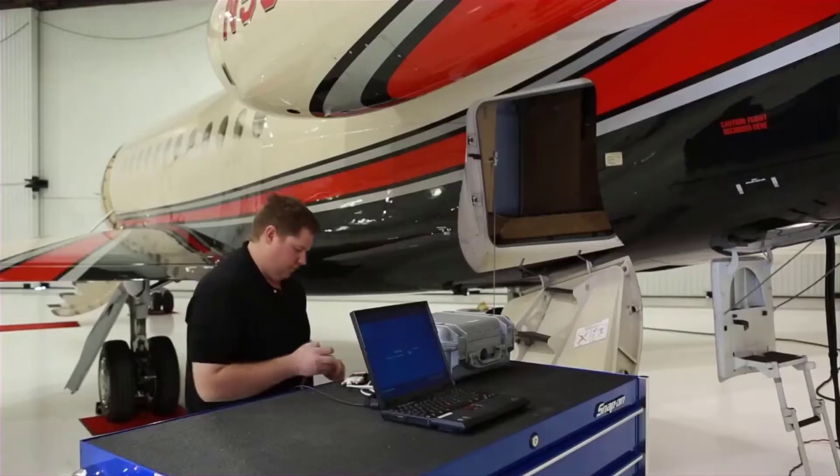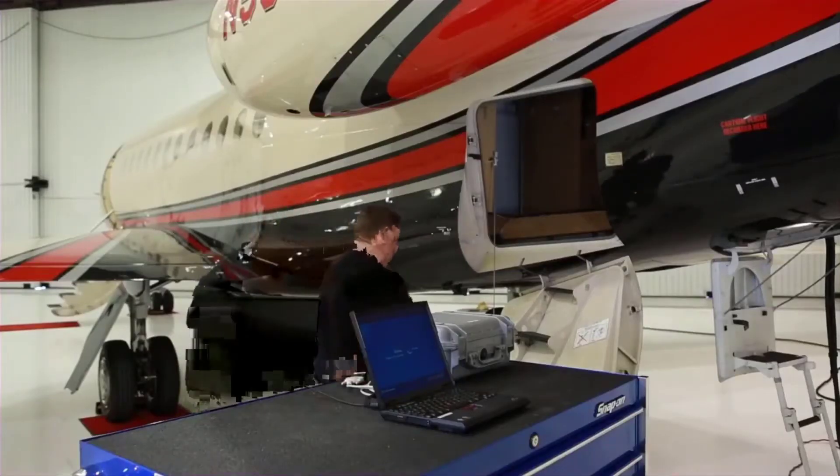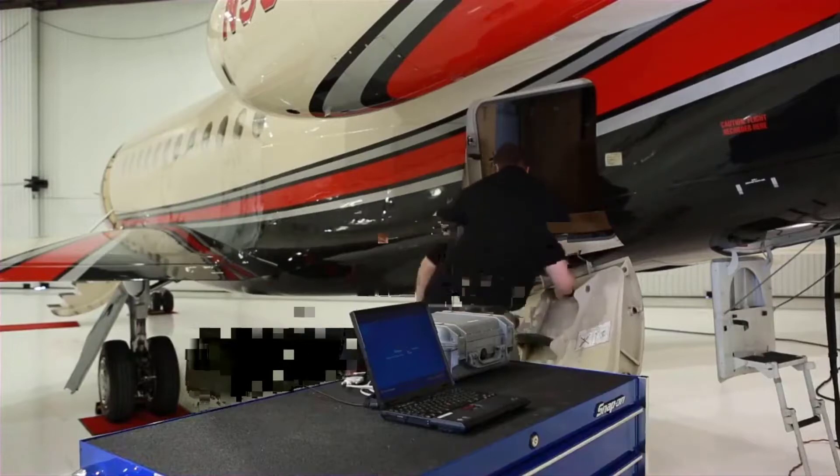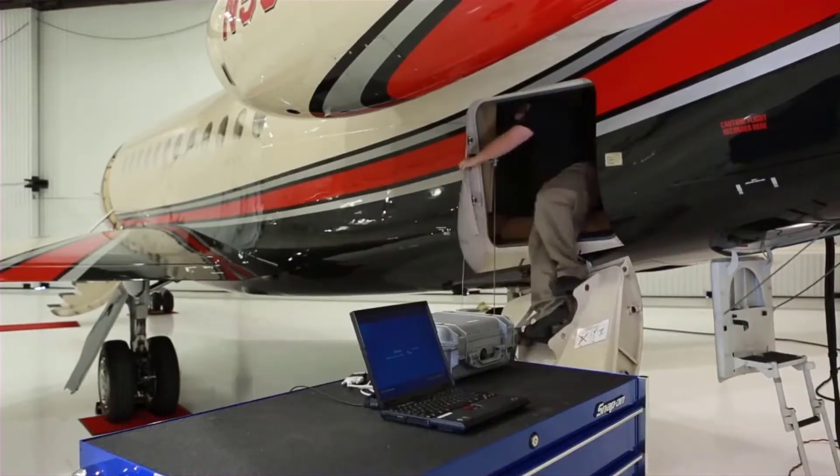The N1 DEC continuously monitors engine parameters and events during engine operation and periodically stores the required information in memory located within the DEC. At specified intervals, the data stored within the N1 DEC memory must be downloaded for review and evaluation.